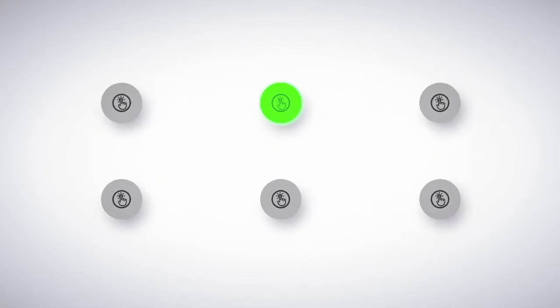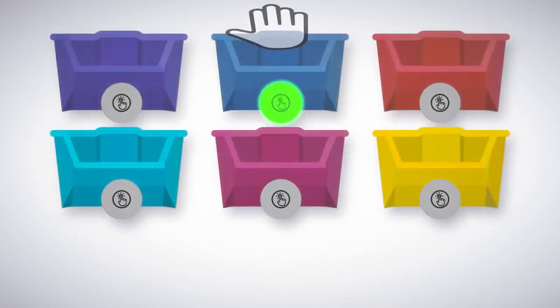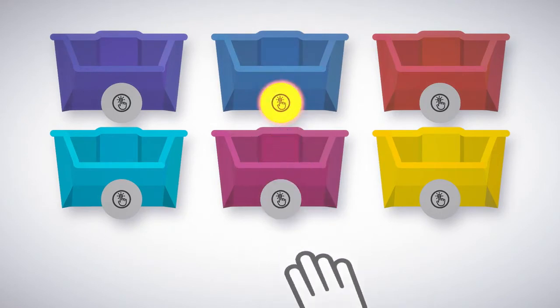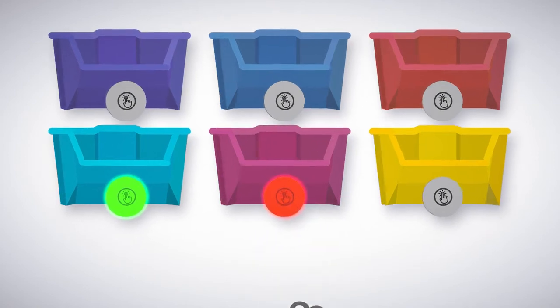Pick-to-light devices use bright, colorful light to identify which bin to pick from and then verify the correct pick with integrated sensors or touch buttons. If an incorrect pick is ever made, the device alerts the worker so the mistake can be corrected immediately.